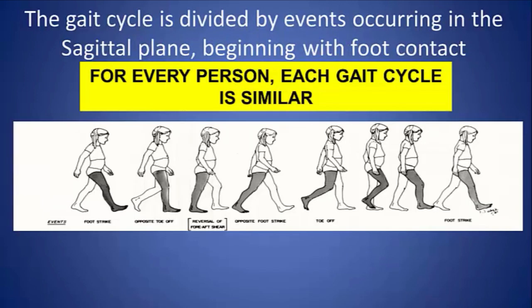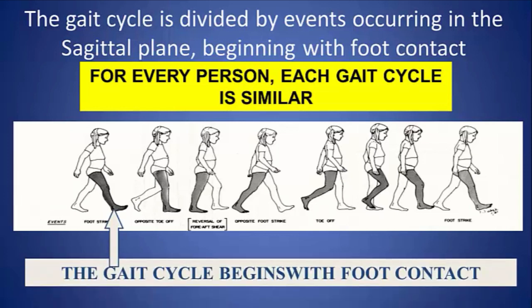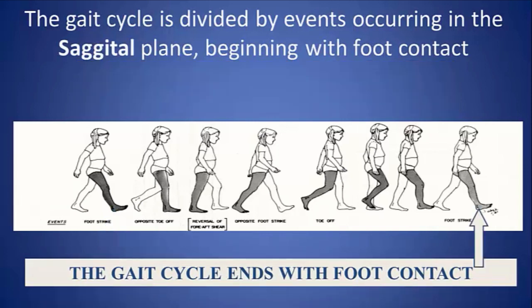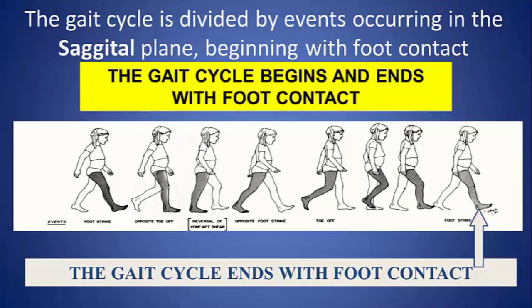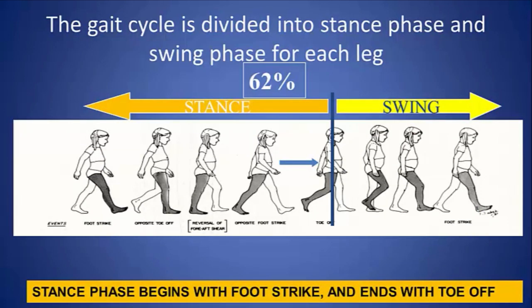The gait cycle is divided into specific events occurring in the sagittal plane, beginning with foot contact. The gait cycle begins with foot contact and ends when that same foot, after going through a complete cycle, contacts the floor again at foot strike. This describes the gait cycle, which is further subdivided into several different phases. The gait cycle begins and ends with foot contact, and that constitutes one complete stride.